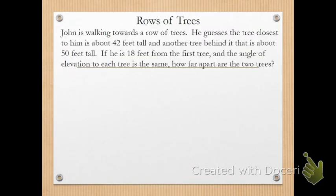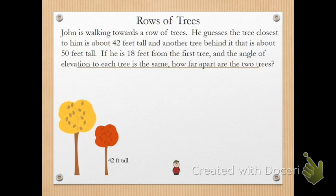We're going to look at another example. Only this time I'm going to focus more on the setup than I am on the actual how to solve it. I feel like we've been through that a couple of times now. Alright. So in this example, we have John walking towards a row of trees. He guesses that the tree closest to him is about 42 feet tall. And there's another tree behind it. He thinks it's about 50 feet tall. So he's 18 feet from a first tree. And the angle of elevation, he judges to be the same for each tree. So the angle from him to the first tree is the same as him to the top of the second tree. So I'm going to call that theta. So what he's looking for is how far apart the two trees are.